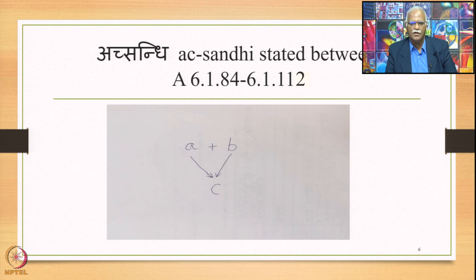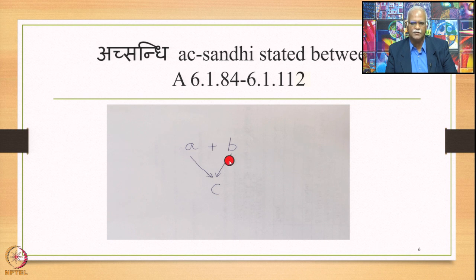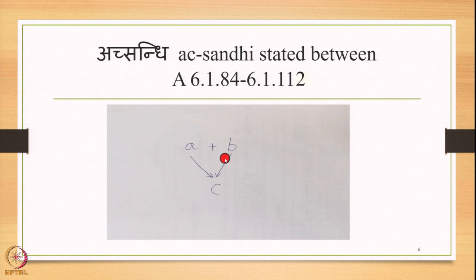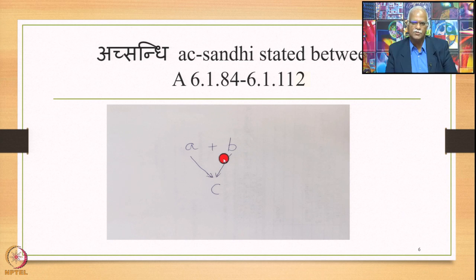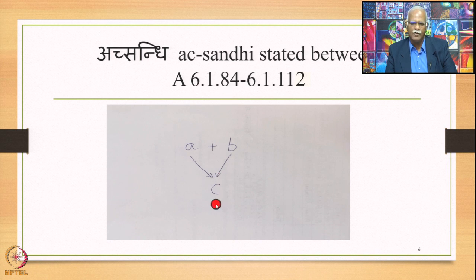This is shown in the diagram where we have A plus B in close proximity in the Samhita mode — A comes immediately before B and B comes immediately after A, bracketing each other and specifying each other as environment. In this environment, one of the rules stated in the section beginning with 6.1.84 applies and generates output C. So A plus B are the two Sthanis and C is the one Aadesha: two substituents, one substitute.